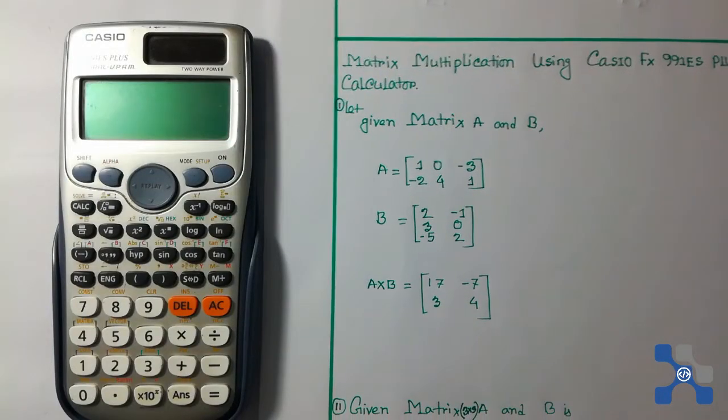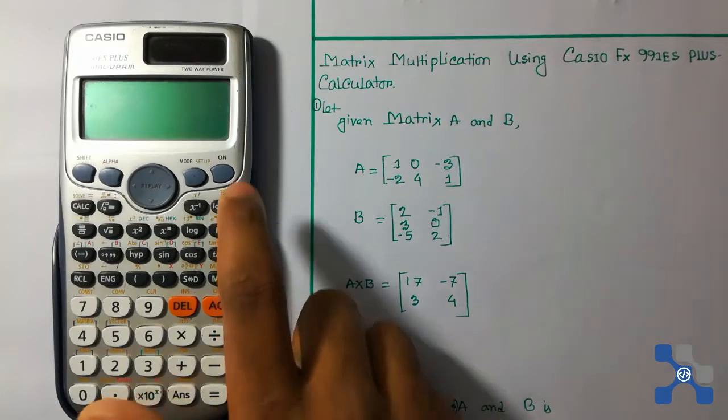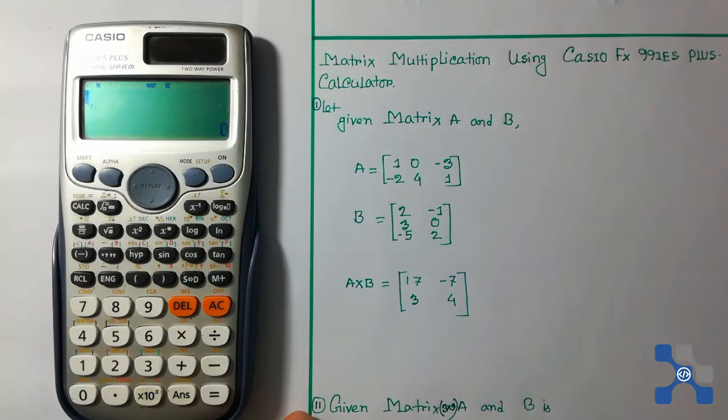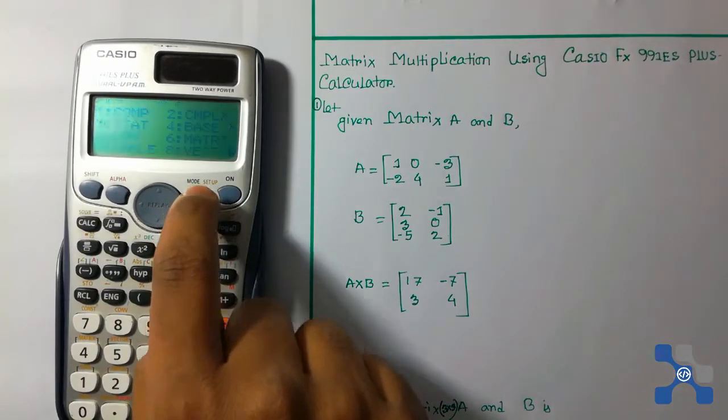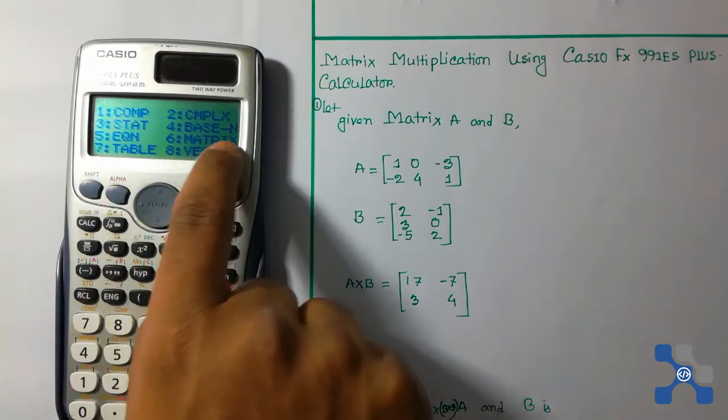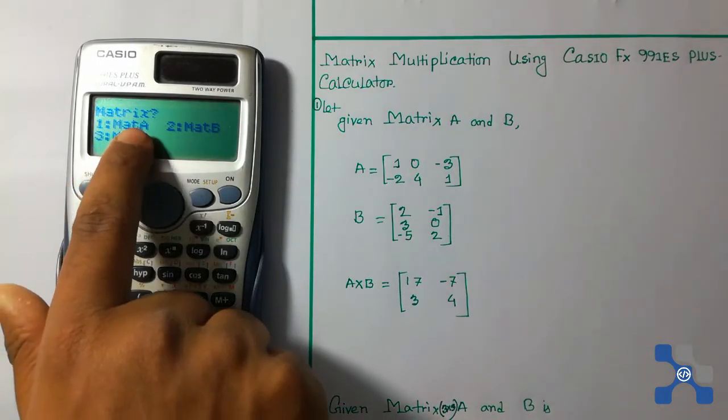I will show you how to do matrix multiplication using a calculator. Press the power button to turn on the calculator. Now press the mode button and then press 6 because 6 is for matrix. Here are three matrices: mat A, mat B, and mat C.